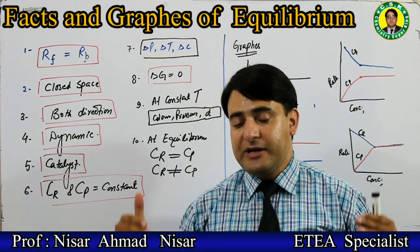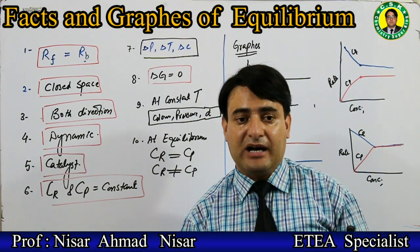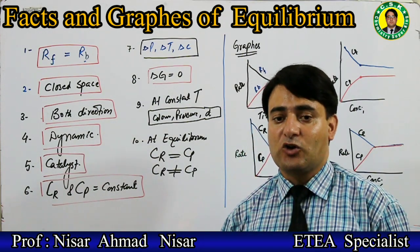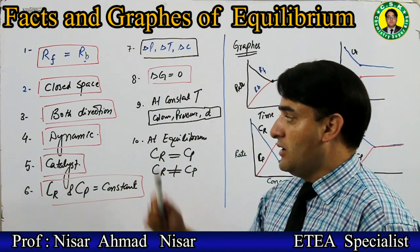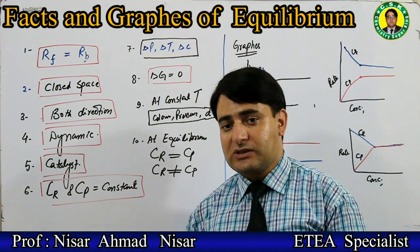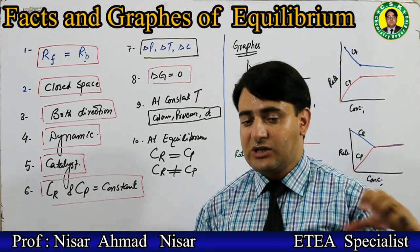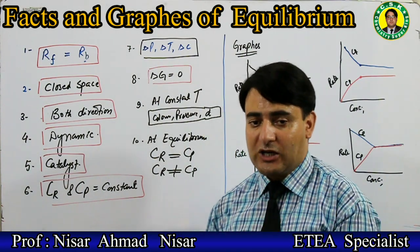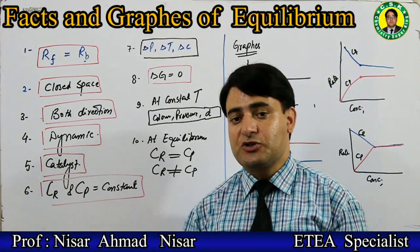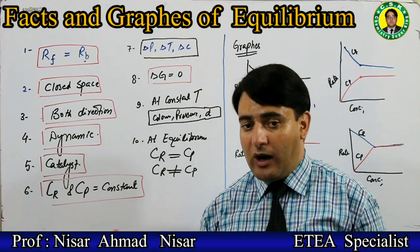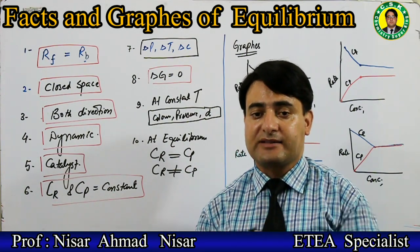Chemical equilibrium can be attained from both directions. Also remember: equilibrium is dynamic in nature. Whether chemical equilibrium or physical equilibrium, it is dynamic - meaning after the two opposite processes reach equilibrium, they do not stop but continue at equal rate.